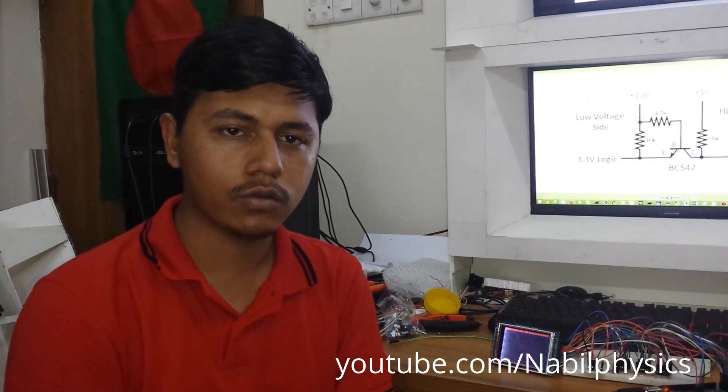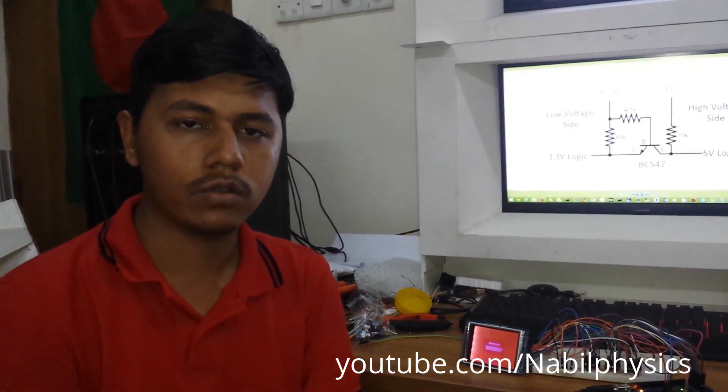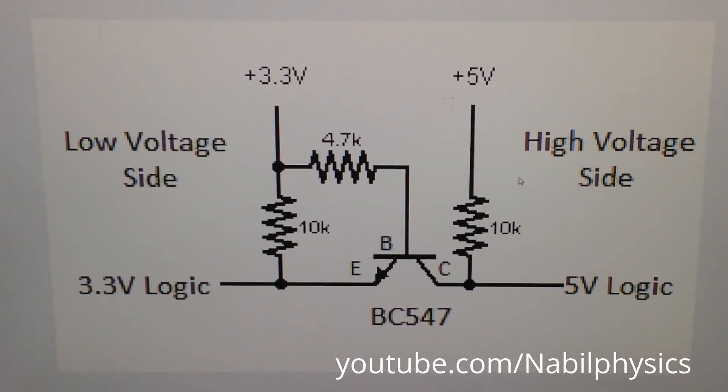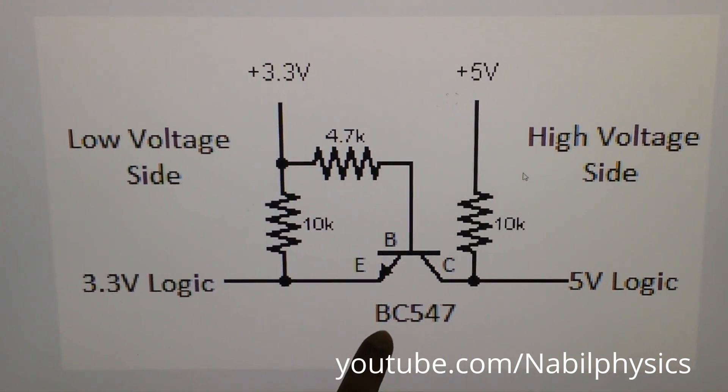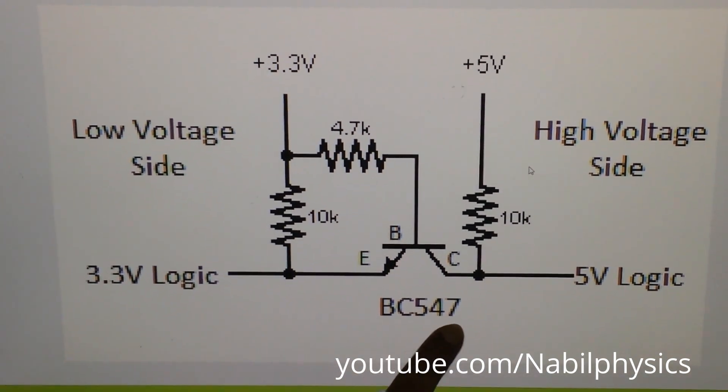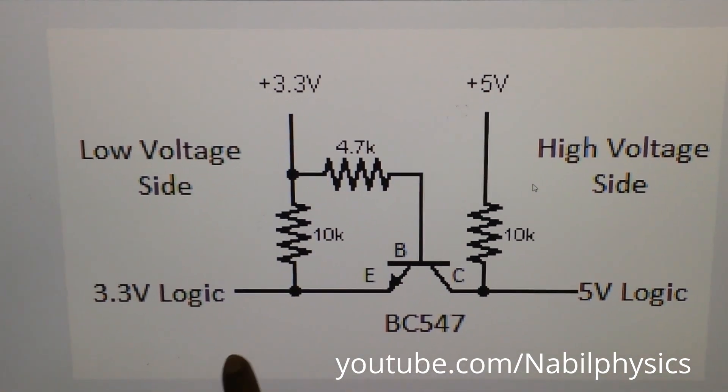Now I am going to show you the circuit to convert 5 volt to 3.3 volt. So here is the circuit. As you can see that there is a transistor and 3 resistors. I have used a BC547 transistor to convert 5 volt to 3.3 volt.